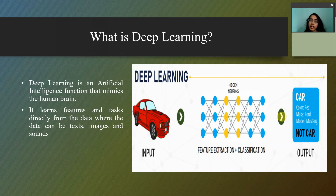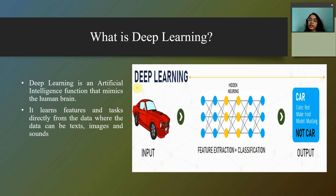Deep learning is something that mimics the human brain. How does it mimic the human brain? Let's consider an example. You have seen an unknown object, and when you first see an unknown object, you cannot recognize it because you haven't seen it before. So what will you do? You will ask your friends or peers, or search in books, or search the internet, and you will learn about that object. After learning about it, when you see that object a second time, you can recognize it — because you have trained your brain about that object. Deep learning works in a similar manner.